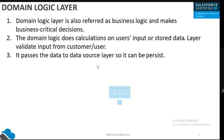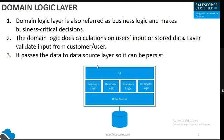In this image, we have a three-layered system architecture. The first is the UI layer, then we have the business logic layer, and the data access layer is the third one. We are right now discussing the second layer — the business logic layer — where all the logic needs to be written.